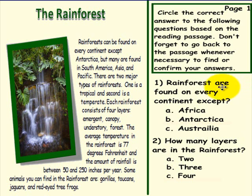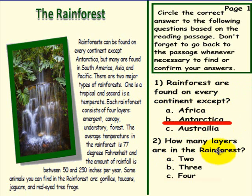Here are the answers. Number 1: Rainforests are found on every continent except Antarctica, because it is way too cold. Question 2: How many layers are in the rainforest? The correct answer is 4. If your answer matches ours, that is terrific! If you would please have another student come up to the Smart Board for the next series of questions, and while they are coming up, please pick up your eraser and erase your answers. Thank you.